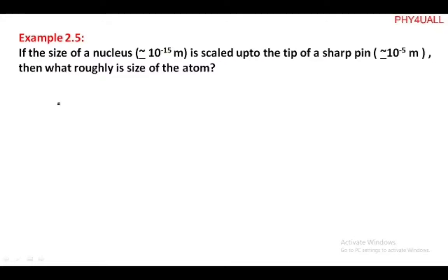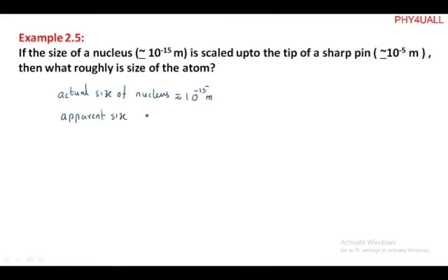Let's discuss example 2.5. If the size of a nucleus is given as approximately 10 to the power of minus 15 meter, and it is scaled up to the tip of a sharp pin at approximately 10 to the power of minus 5 meter, then what roughly is the size of an atom? The actual size of the nucleus is approximately 10 to the power minus 15 meter, and the apparent size — the tip of a sharp pin — is 10 to the power minus 5 meter.